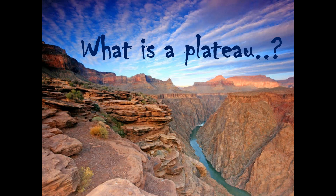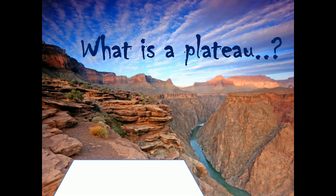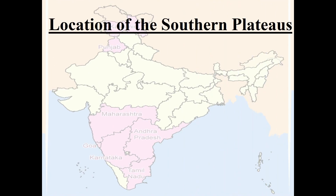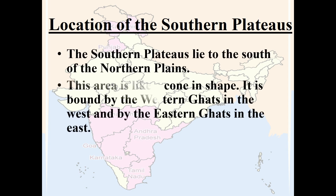Let's learn what is a plateau. A plateau is a high land which is almost flat at the top. Now let's learn about the location of the southern plateaus. The southern plateaus lie to the south of the northern plains.